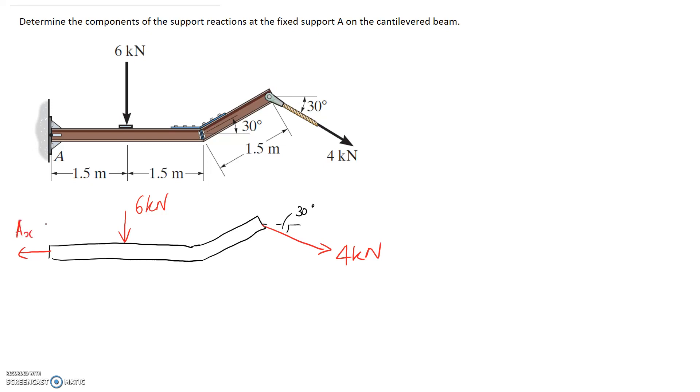So let's label that Ax. We know we're going to have a vertical component here for the reaction and both of these externally applied forces are going down so we'd probably expect the reaction to be going up. So let's call it Ay.